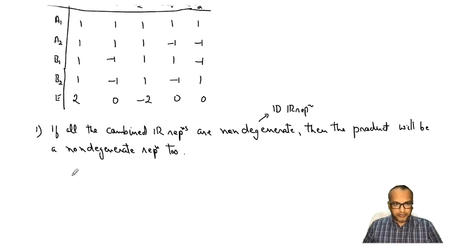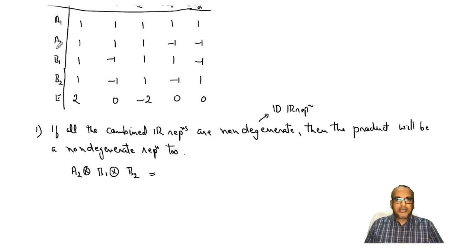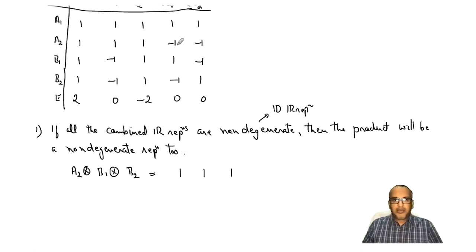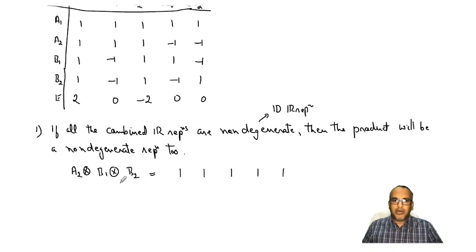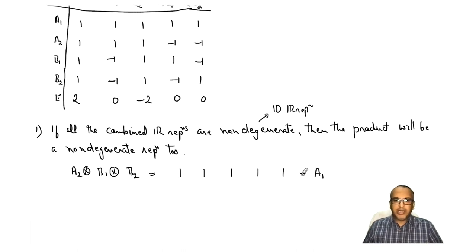Let's say we are making a direct product combining A2 with B1 with B2. You have 1×1×1 = 1, then 1×(−1)×(−1) = 1, then 1×1×1 = 1, then (−1)×1×(−1) = 1, then (−1)×(−1)×1 = 1, and (−1)×(−1)×(−1) = −1. This gives a 1D representation — all of these are non-degenerate representations, and the result is A1 directly.